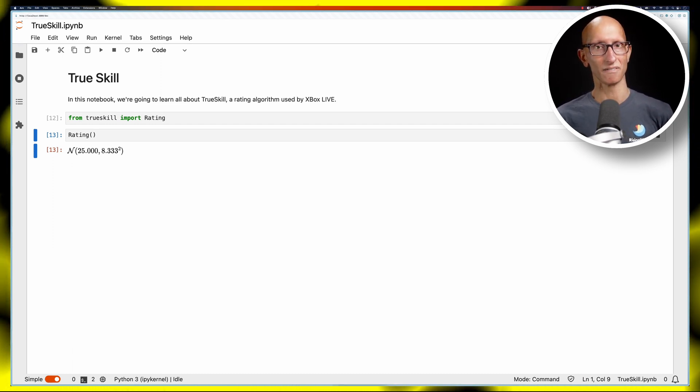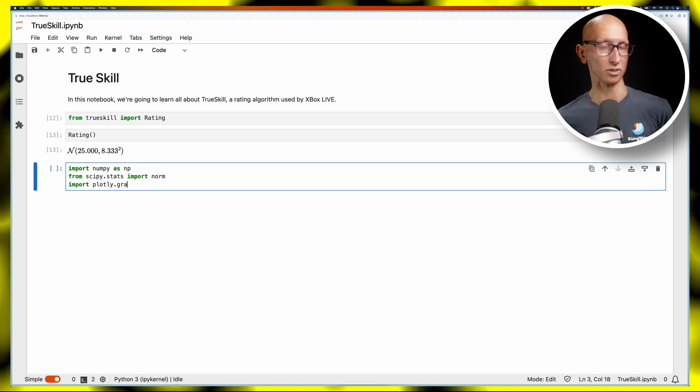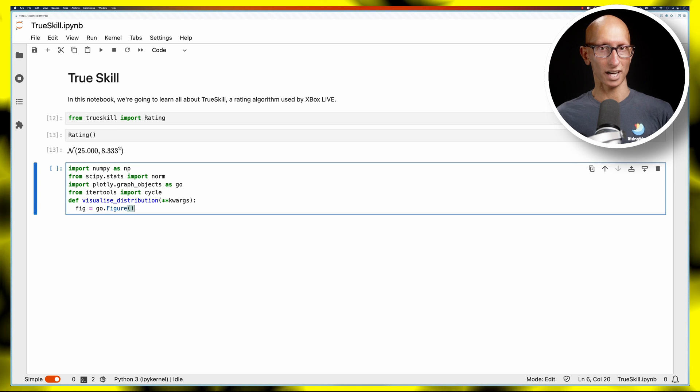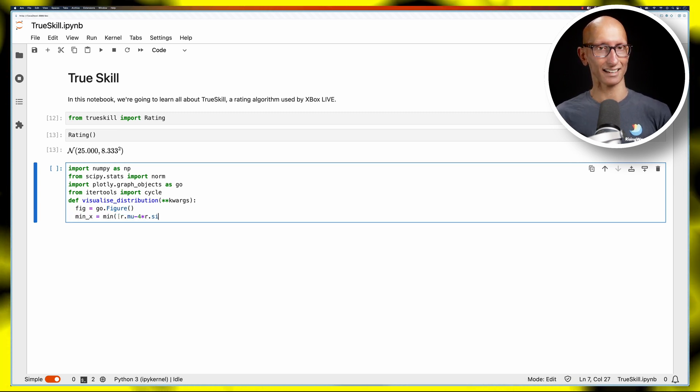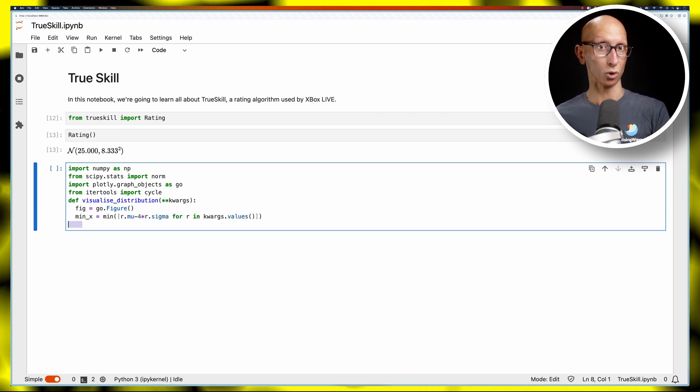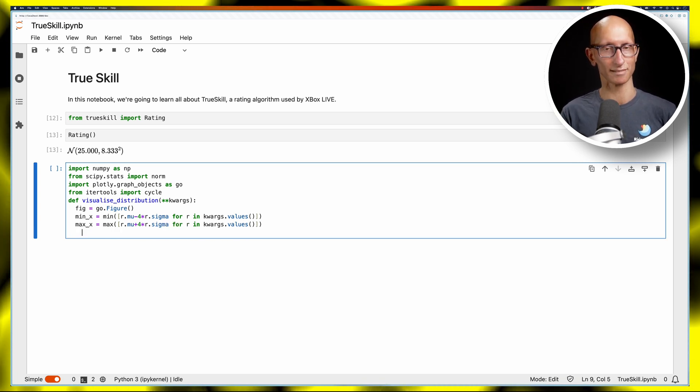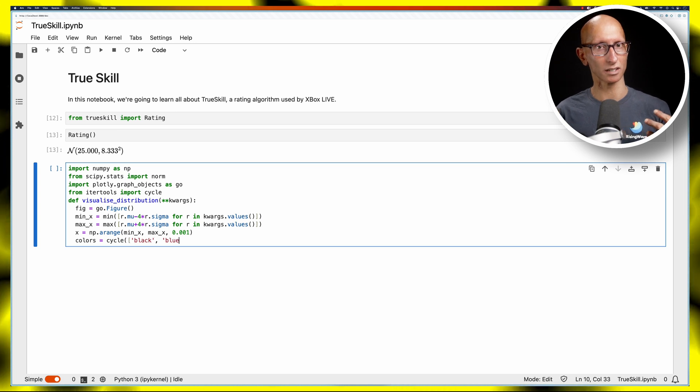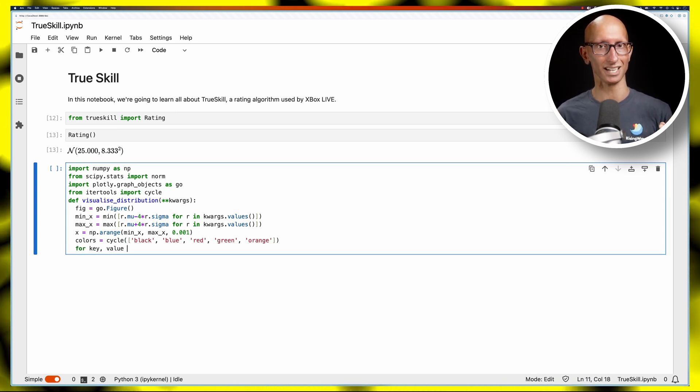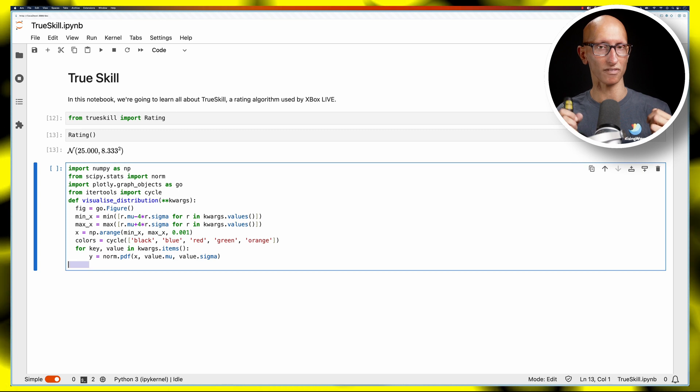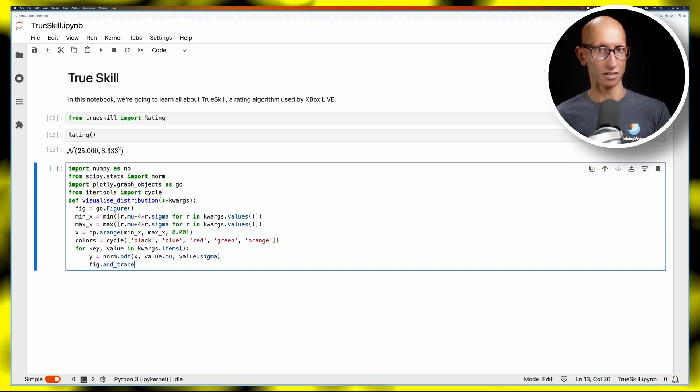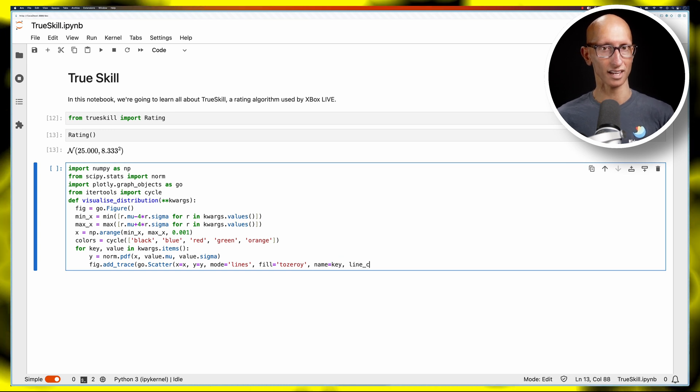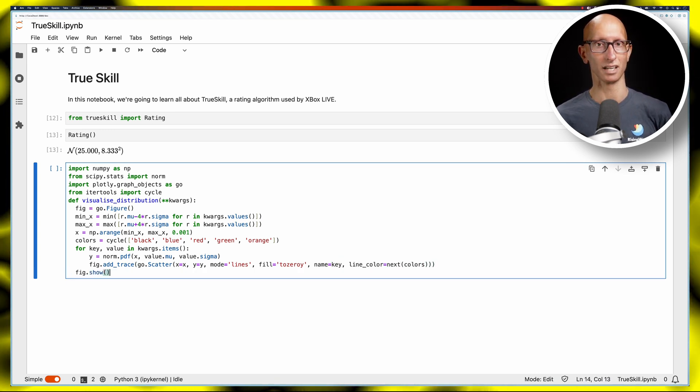Now we're going to bring in a function that lets us visualize the distribution for that rating. We've got this function here called VisualizeDistribution and what it does is it creates some values on the x-axis, going from the minimum which is four standard deviations away from the average, up to the maximum which is four standard deviations above the average. Then we're going to compute the y-axis which is a probability distribution function which works out the likelihood of each of those values for a given Mu and Sigma, and then finally we're going to draw a line chart over those values and fill it in under the curve using the Plotly library.